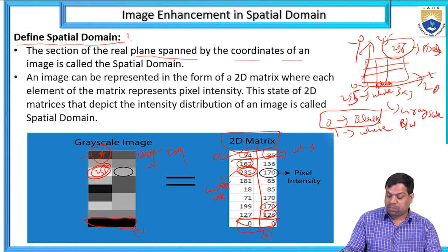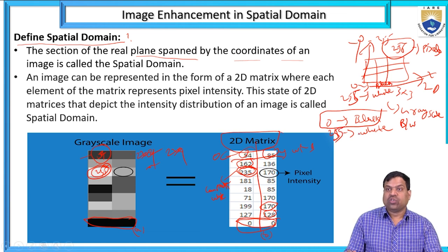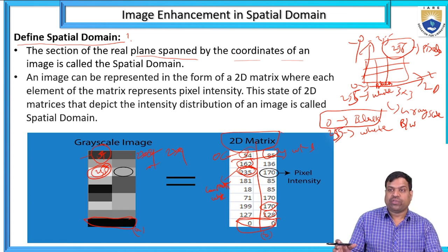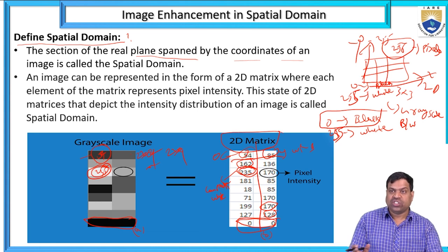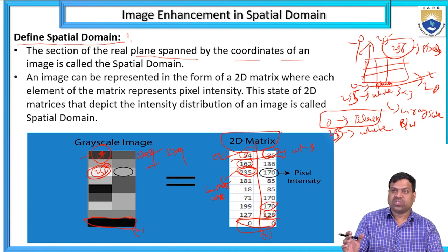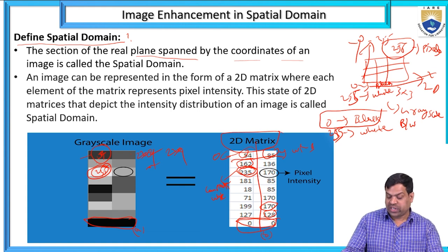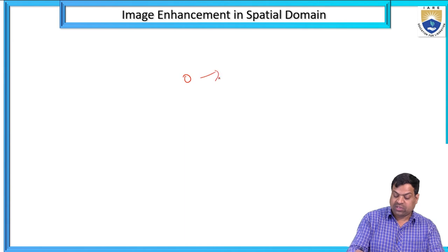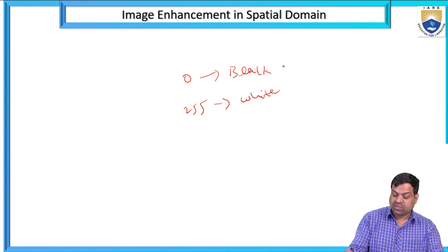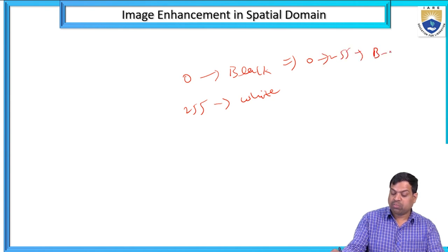0 is black, 255 is white. If the pixel value is 255, that is white. If it is reducing toward 0, it is reaching black. Increasing from 0 means going black to white. When going 0 to 255, that means black to white; 255 to 0 means white going to black.